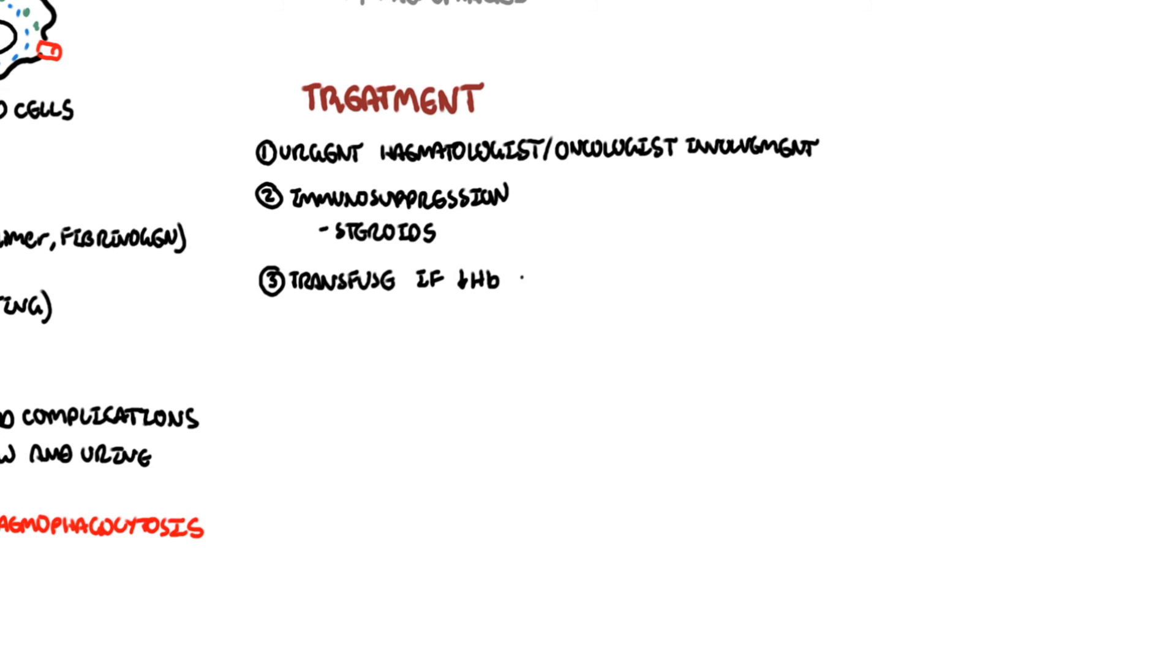Transfuse if you have low red blood cells due to hemophagocytosis or low platelets. Correct coagulopathy associated with this condition. You have low fibrinogen, so you can use fresh frozen plasma, thawed platelets, as well as cryoprecipitate.